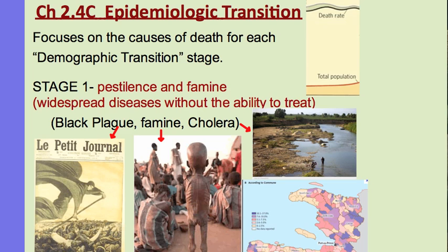The Black Plague is an example of an infectious disease from the Middle Ages in Europe — a lot of people died, spread from fleas on rats that came on ships from Asia. Famine is simply not having enough food. Cholera is a disease spread through dirty water, causing diarrhea, vomiting, and severe dehydration, killing people — especially children — within hours. These diseases could not be controlled, often killed people in their prime, and so life expectancy was very low.